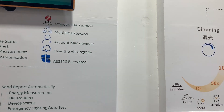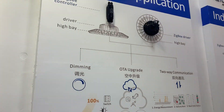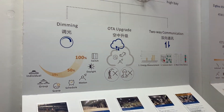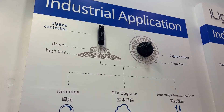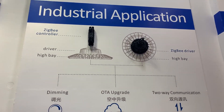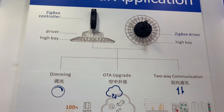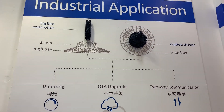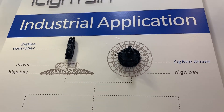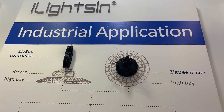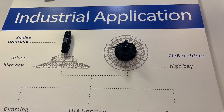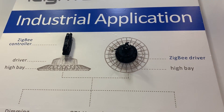Let's take a closer look at our high bay solution. We offer two kinds of solutions. One is a Zigbee controller, which connects to a common dimming driver. The second solution is a Zigbee driver, where Zigbee modules are already built inside, so you don't need any extra common dimming driver.